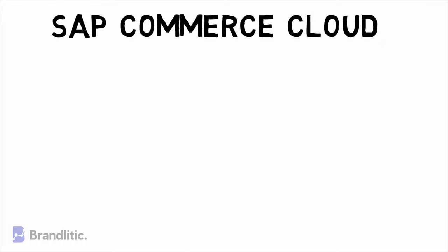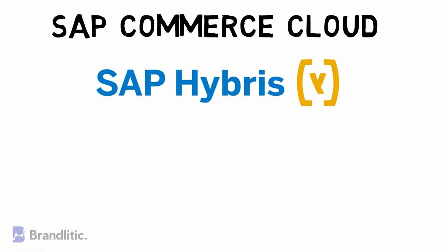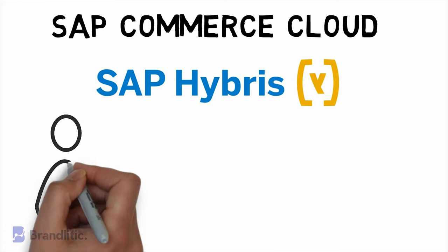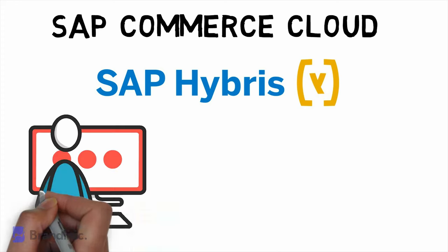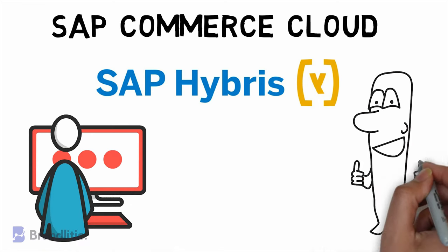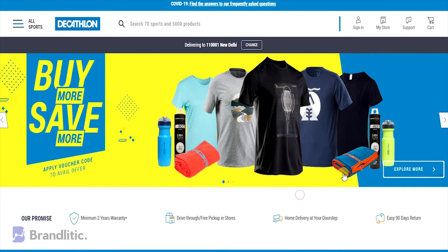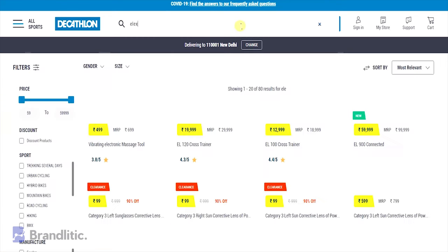Now you might be thinking, isn't that SAP Commerce Cloud? Well, SAP Hybris is also known as SAP Commerce Cloud, and it's essentially the same e-commerce platform. SAP Commerce Cloud is the most effective and proven tool to engage customers online and supports businesses with customer engagement and personalization through its excellent e-commerce experience. For example, Decathlon uses Hybris technology to fulfill their customers' requirements effectively and efficiently.